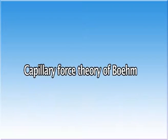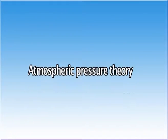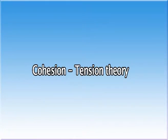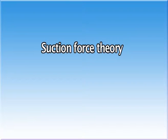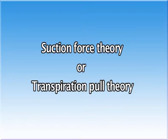As per the physical force theories, dead cells are responsible for ascent of sap and the mechanism is purely physical. Different physical theories include the imbibition theory of Sachs, capillary force theory of Boehm, atmospheric pressure theory, and cohesion-tension theory. Many of these theories have been rejected for various reasons. The only widely accepted theory to explain the mechanism of ascent of sap is the cohesion-tension theory.